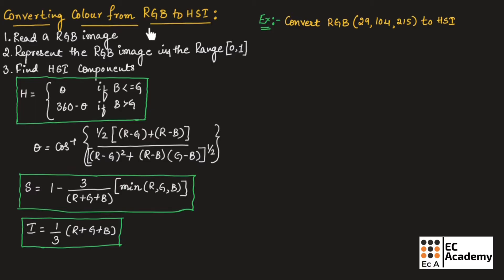Here we will see RGB to HSI conversion. The first step is to read the RGB image to identify the values of R, G, and B. Then we need to represent the RGB image in the range of 0 and 1, which means the RGB values should be normalized in the range of 0 and 1.